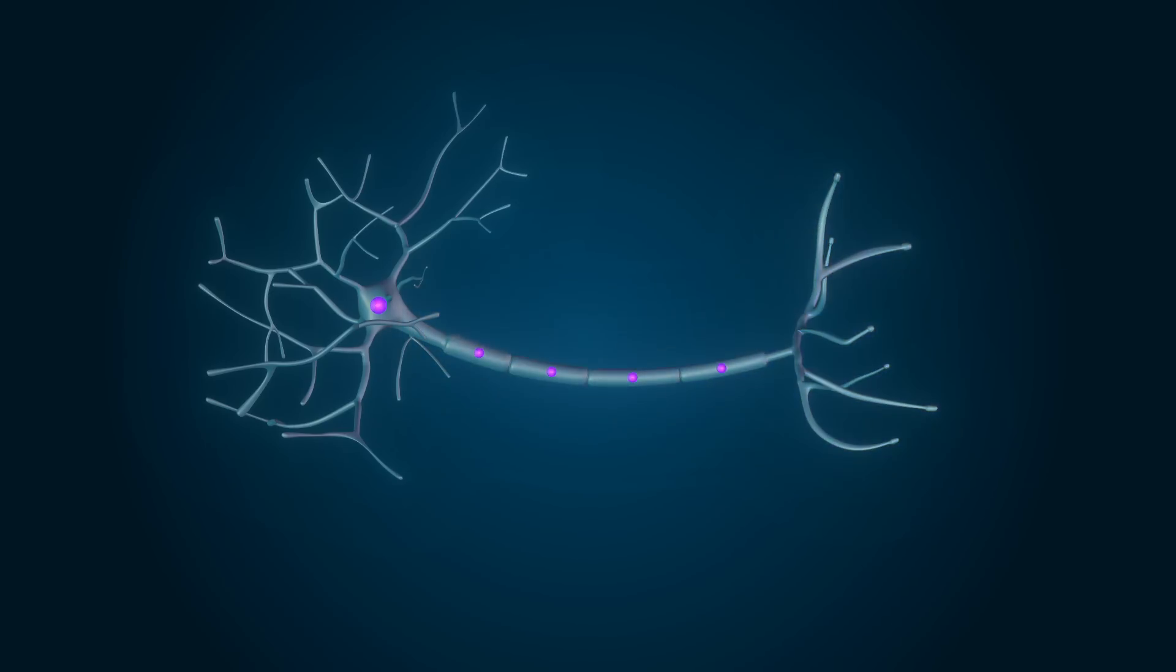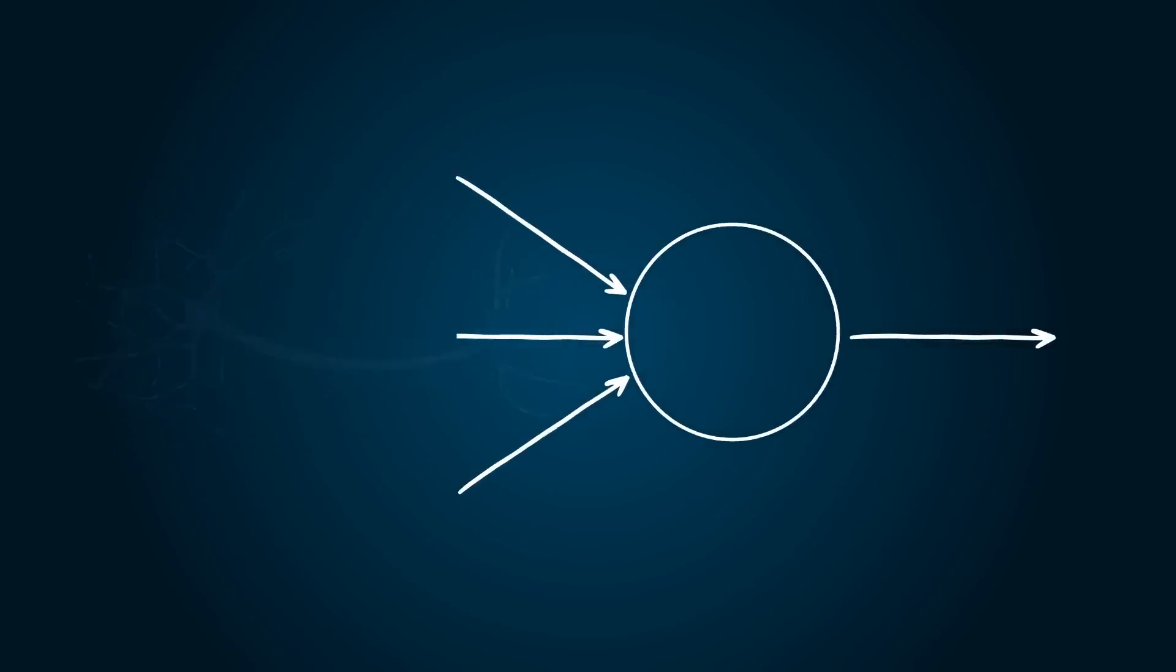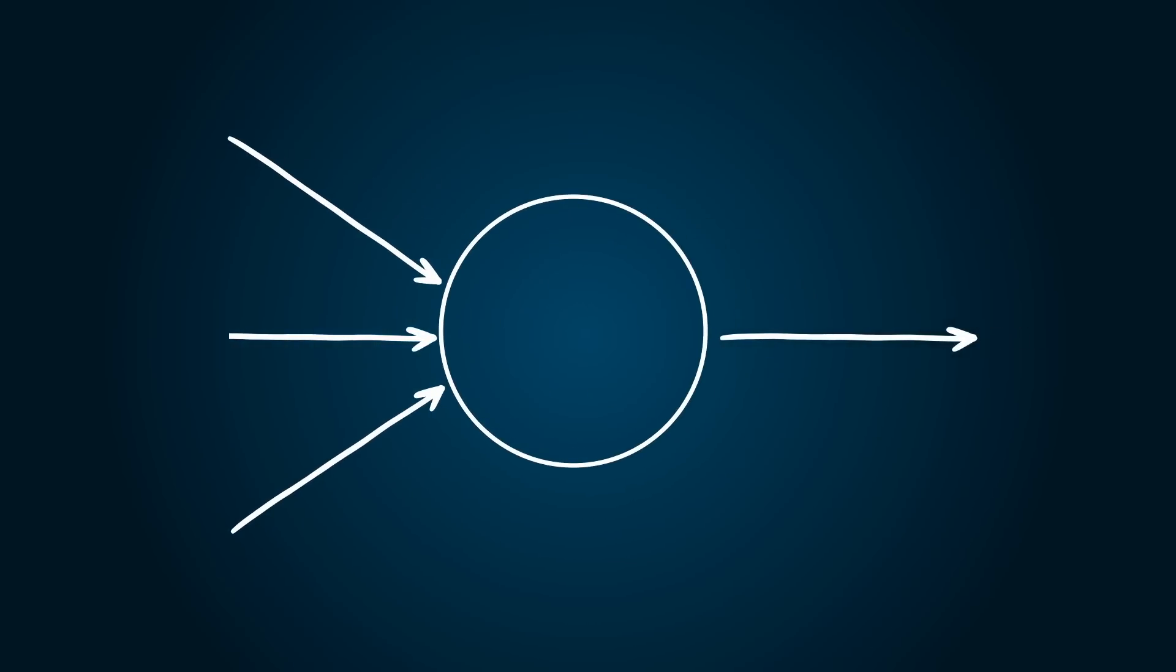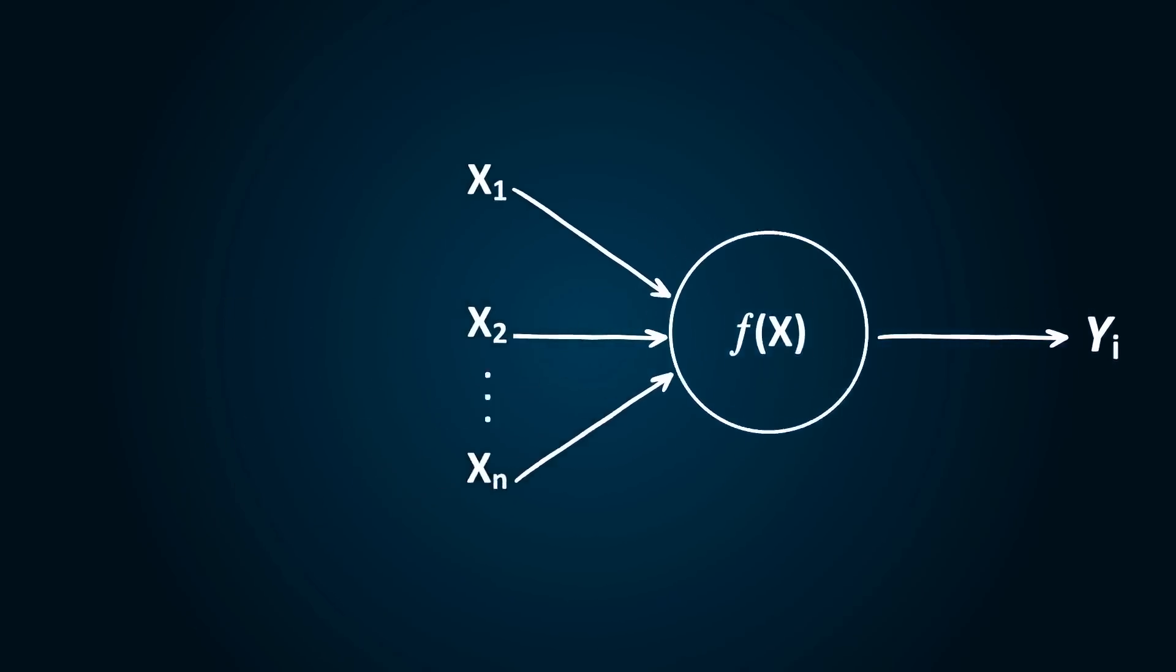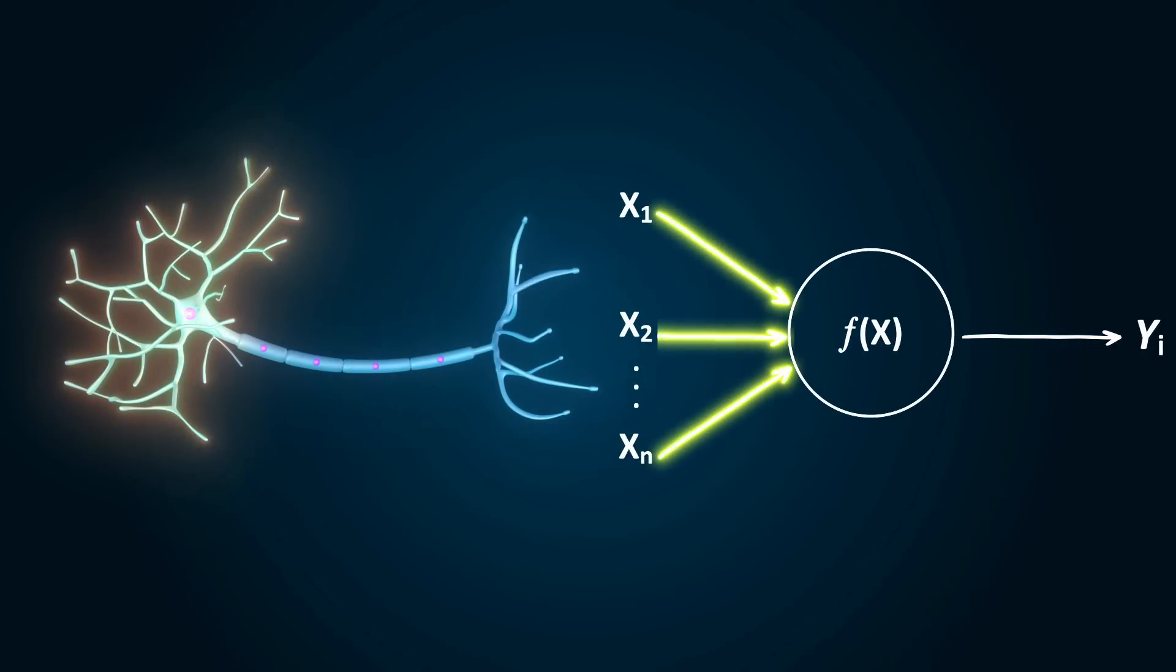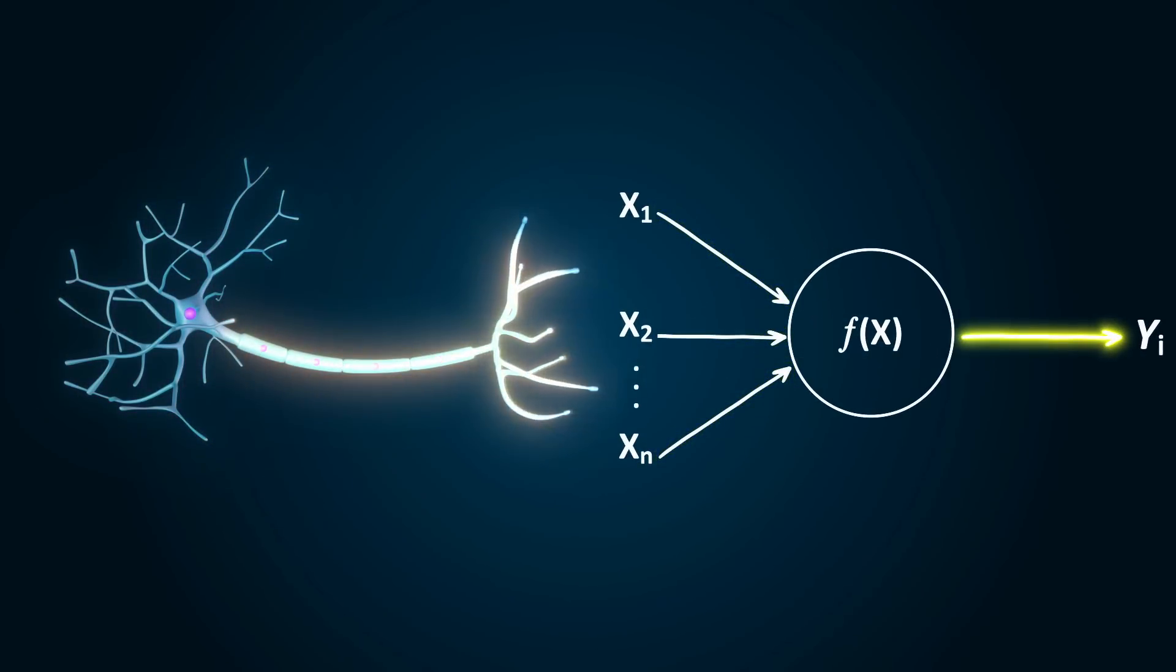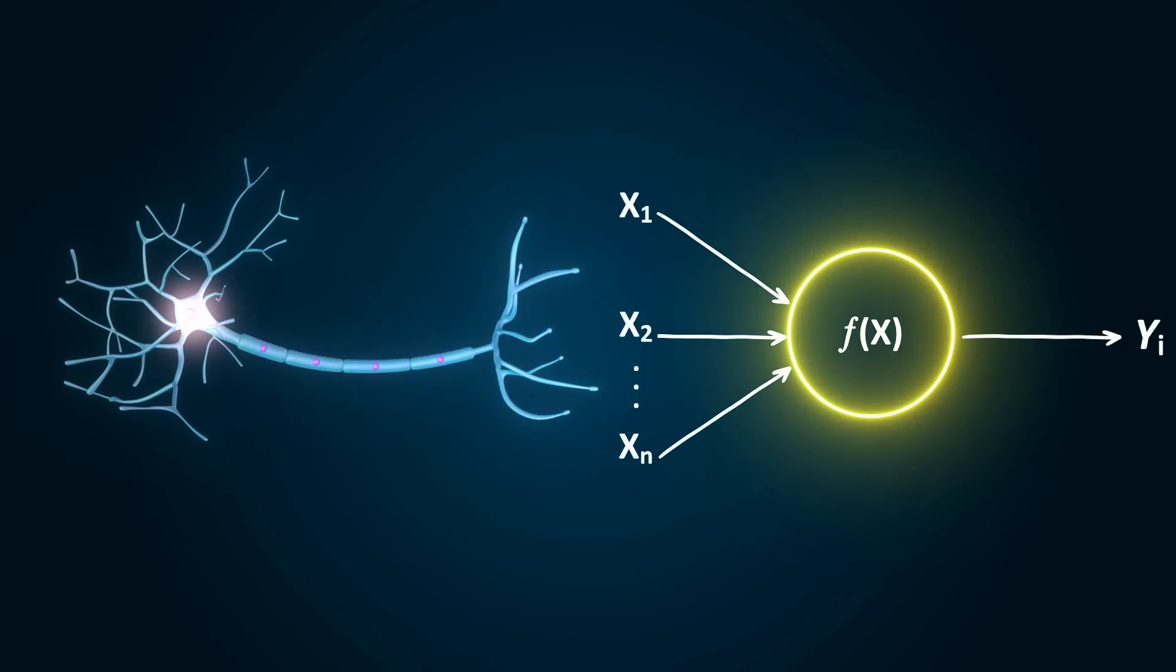In a similar way, a neuron in a neural network is a processor, which is essentially a function with some parameters. This function takes in inputs, and after processing the inputs, it creates an output which can be passed along to another neuron. The input is analogous to the dendrites, and the output is analogous to the terminal axons. The function in the neural network is like the cell body.